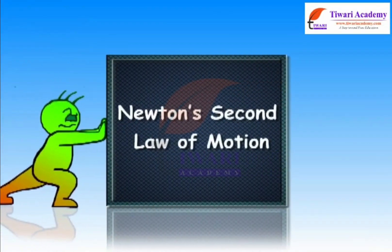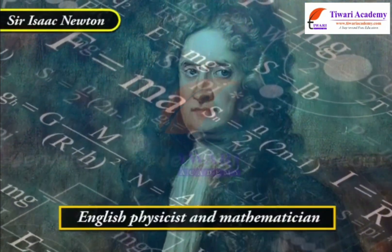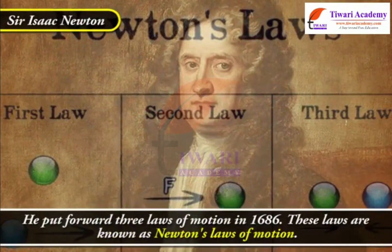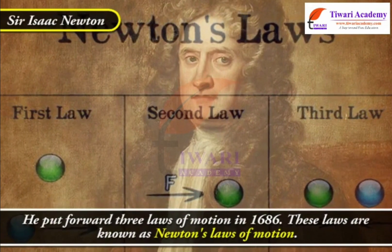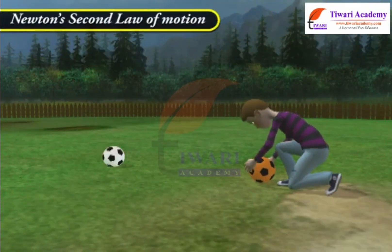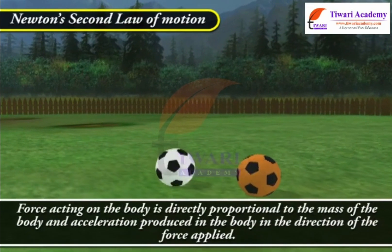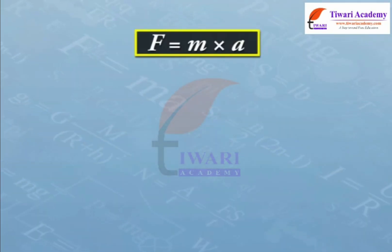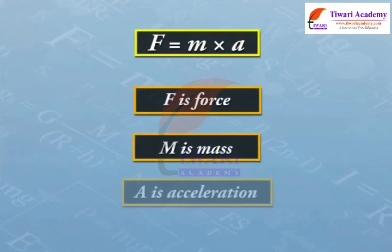Newton's Second Law of Motion states that the force acting on a body is directly proportional to the mass of the body and the acceleration produced in the body in the direction of the force applied. F is equal to M into A, where F is the force, M is mass, and A is acceleration.